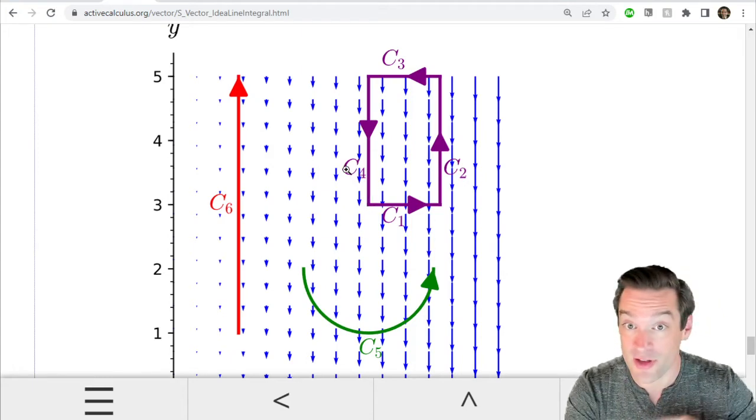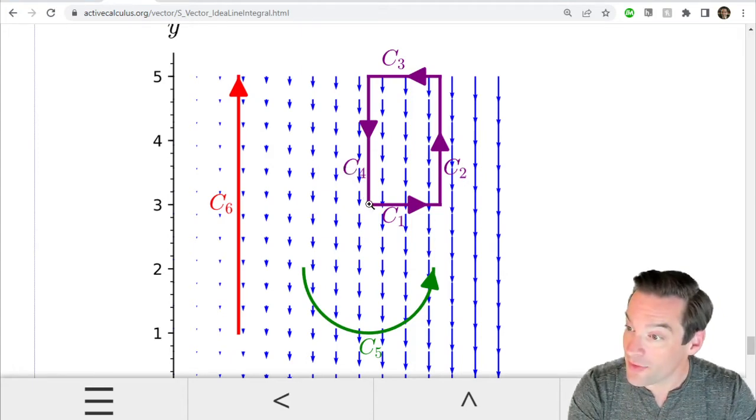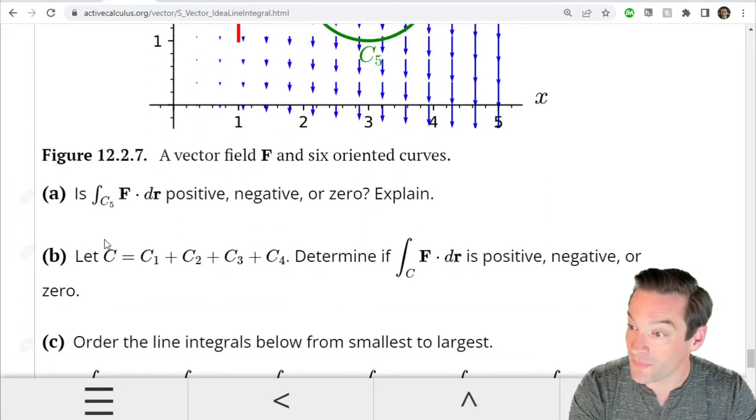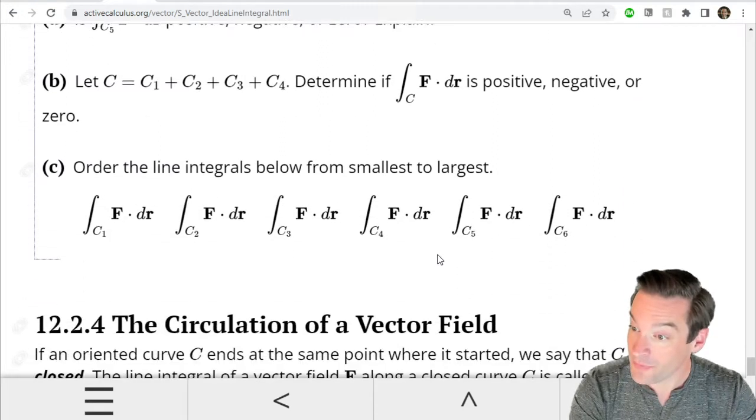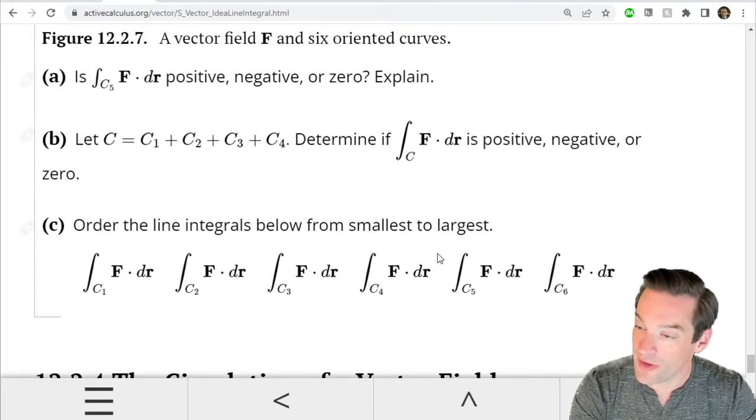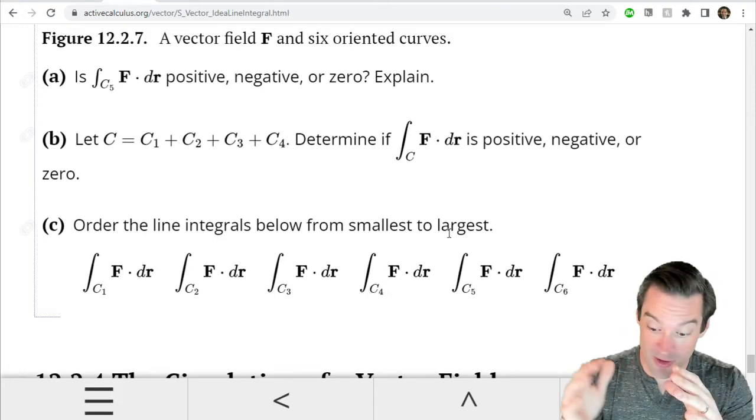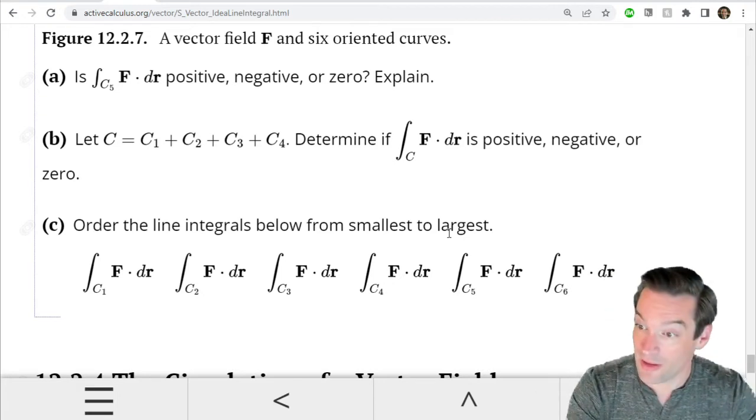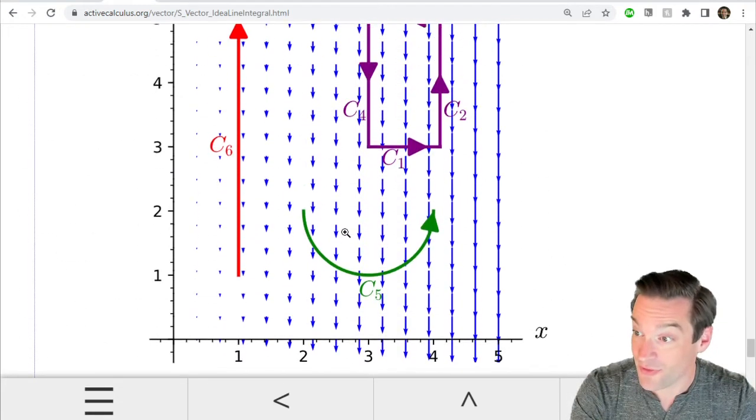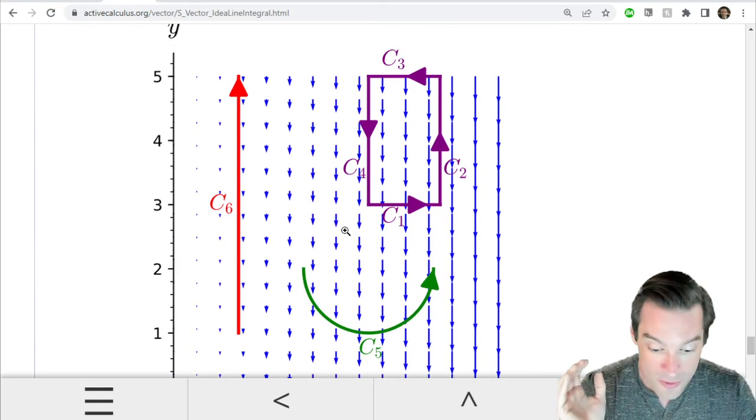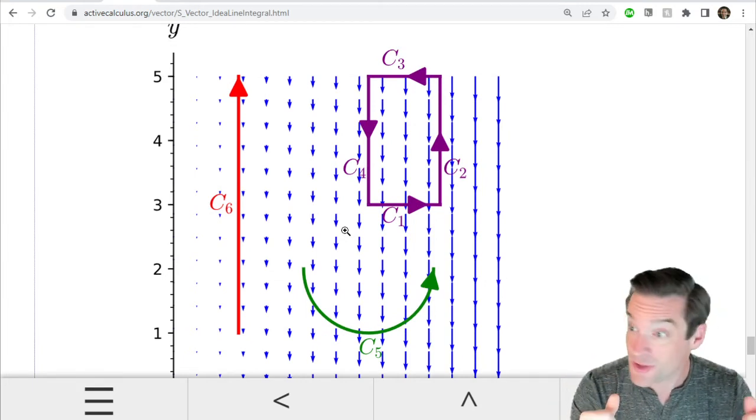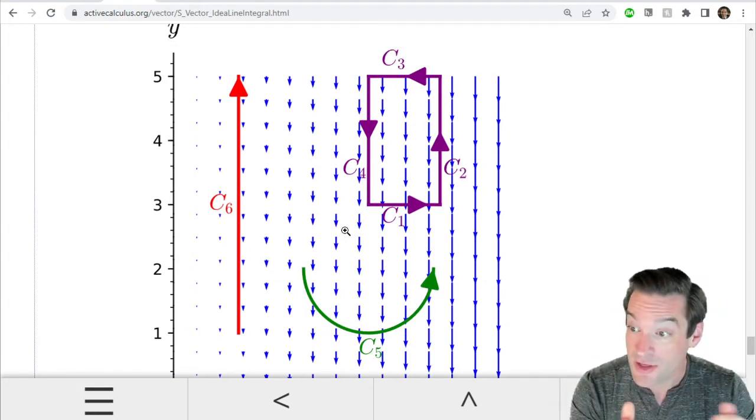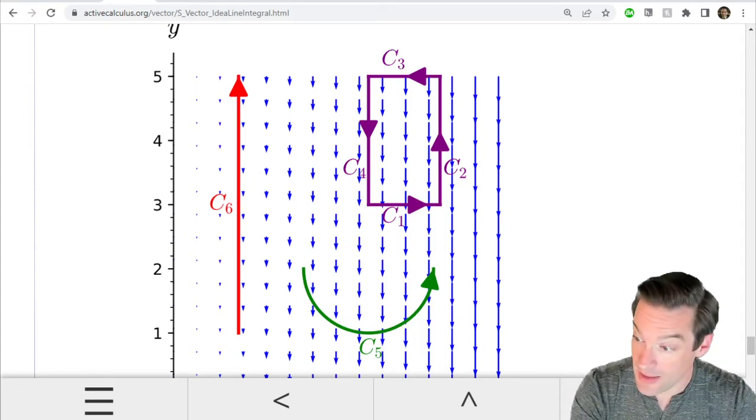If we're starting at the southwestern corner and then doing this rectangle counterclockwise, we want to figure out whether the path integral there is positive, negative, or zero. And then try to order these path integrals from smallest to largest, from most negative up to most positive on the number line. We can do this without doing any explicit calculation, just by looking at the orientation of the vector field with respect to the path at each point.